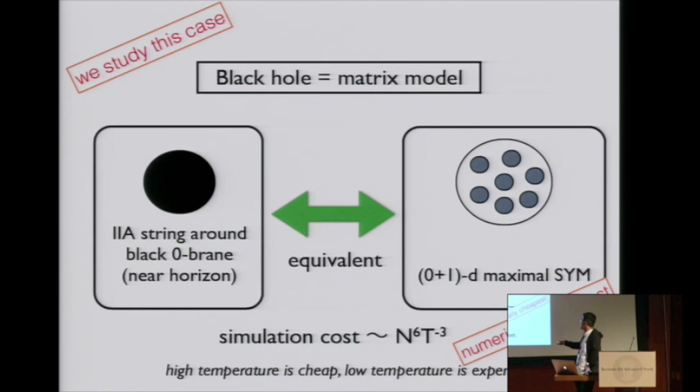Simulation cost roughly increases with this power. When we consider thermodynamics, our extent of Euclidean time direction is 1 over temperature. If you go to low temperature, it corresponds to larger volume, and you need more lattice points. So simulation cost increases if you go to low temperature or larger n.